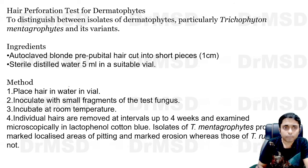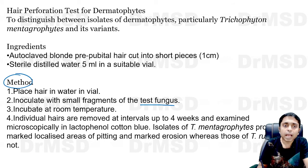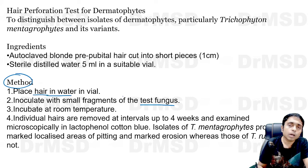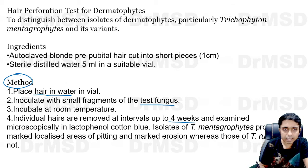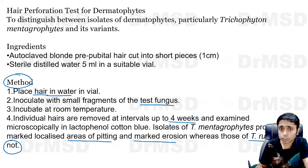What is this test basically? The methodology is that we take the test fungus — which should be a dermatophyte of unknown type — and add it along with hair in the presence of water. If you observe at monthly intervals, you can identify localized areas of pitting and marked erosion. Those caused by Trichophyton rubrum are not going to produce these pits. These pits and erosions in the hair shaft are produced by Trichophyton mentagrophytes.